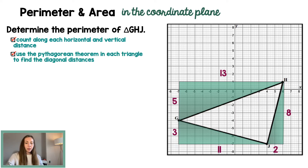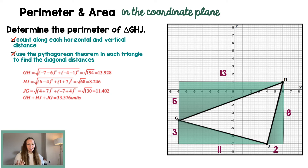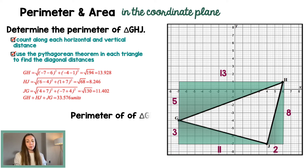Now we're going to use the Pythagorean theorem in each triangle to find the distance that is diagonal. Take a moment, pause the video, and find all those diagonal distances on your own. What you should have found is that the length of GH is approximately 13.9 — that's the square root of 194. HJ is the square root of 68, which is approximately 8.2. And JG is the square root of 130, which is approximately 11.4. So the total perimeter is 33.576 units — and notice these are regular units, not units squared, because it is a distance, not an area.